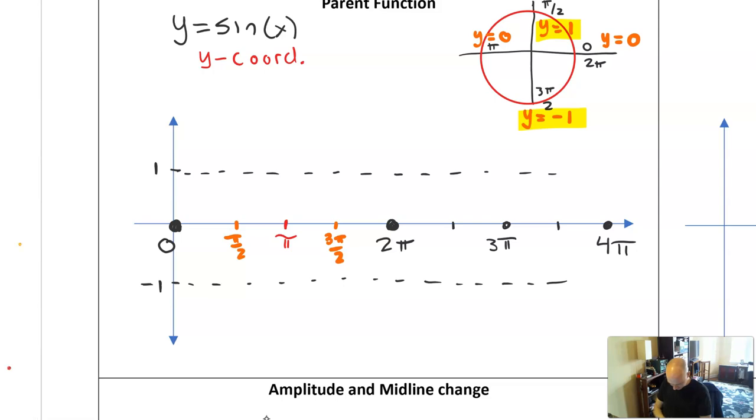Go back to your unit circle, look at all the values from that unit circle, and copy the y values in as you rotate around. So we started at y equals 0, then we're going up to y equals 1, y equals 0, y equals minus 1, and y equals 0.